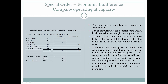The company is operating at capacity of 10,000 units. The opportunity loss for a special order would be the contribution margin on a regular sale. In other words, they're operating at capacity and can sell everything they want at $12 per unit. So if they were to sell a special order and give up an order to a normal customer, they would at least have to make their contribution margin to be willing to accept that order. That would be the opportunity cost they would be giving up. The cost of the opportunity loss would have to be added to the total relevant cost of the order for the special order to make economic sense.